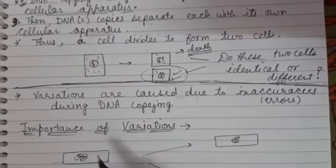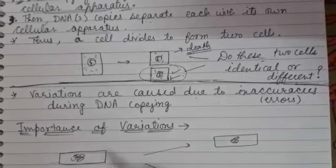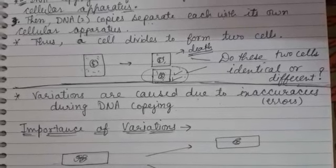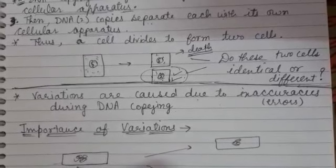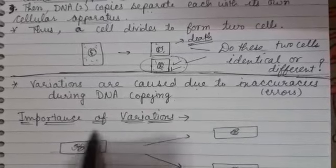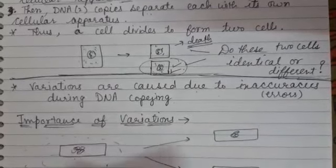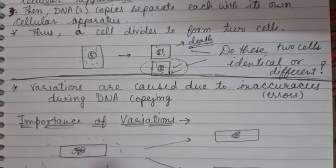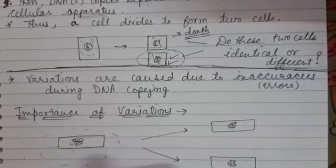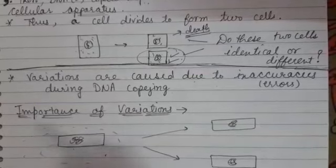Now what is the importance of these variations? Students, you know in an ecosystem, each organism is adapted to live in a particular place. The surroundings of an organism change within a particular place. The surroundings of an organism change with time.